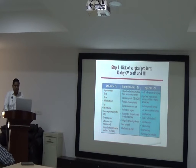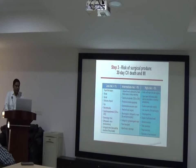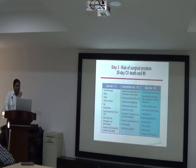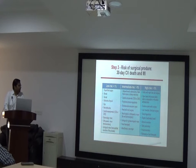Intermediate risk surgery carries a mildly elevated risk of 1–5% perioperative mortality. This includes hernia repair, endovascular aneurysm repair, peripheral arterial angioplasty, head and neck surgery, major neurological or orthopedic surgery, deep and spine surgery, major gynecological surgery, renal transplant, and intrathoracic procedures.